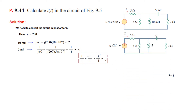Converting the circuit into phasor form: the voltage is written as 6 at angle 0, the capacitor is now denoted by minus j, and the inductor as j2.